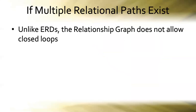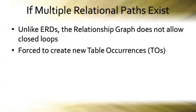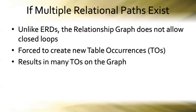That's why we need a management strategy. If multiple relational paths exist between any two entities, the relationship graph in FileMaker does not allow closed loops like those on an entity relationship diagram. We will be forced to create new table occurrences, which will result in many table occurrences on the graph. It's imperative that we keep the relational paths clear and easy to understand.